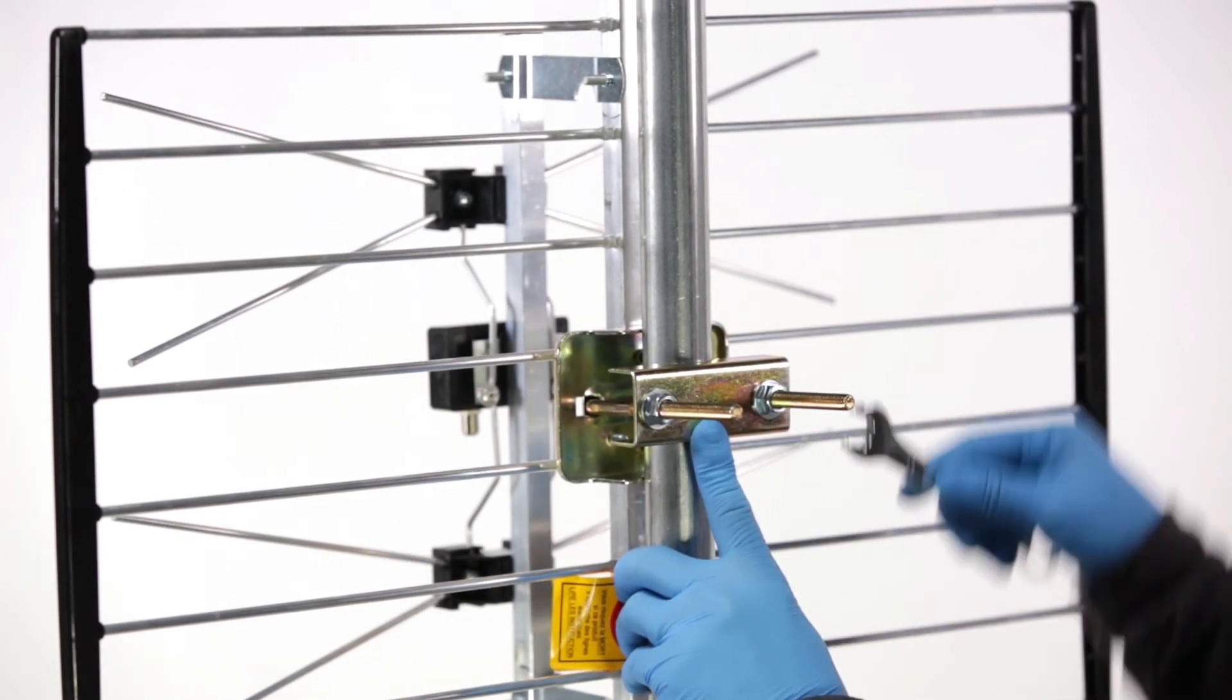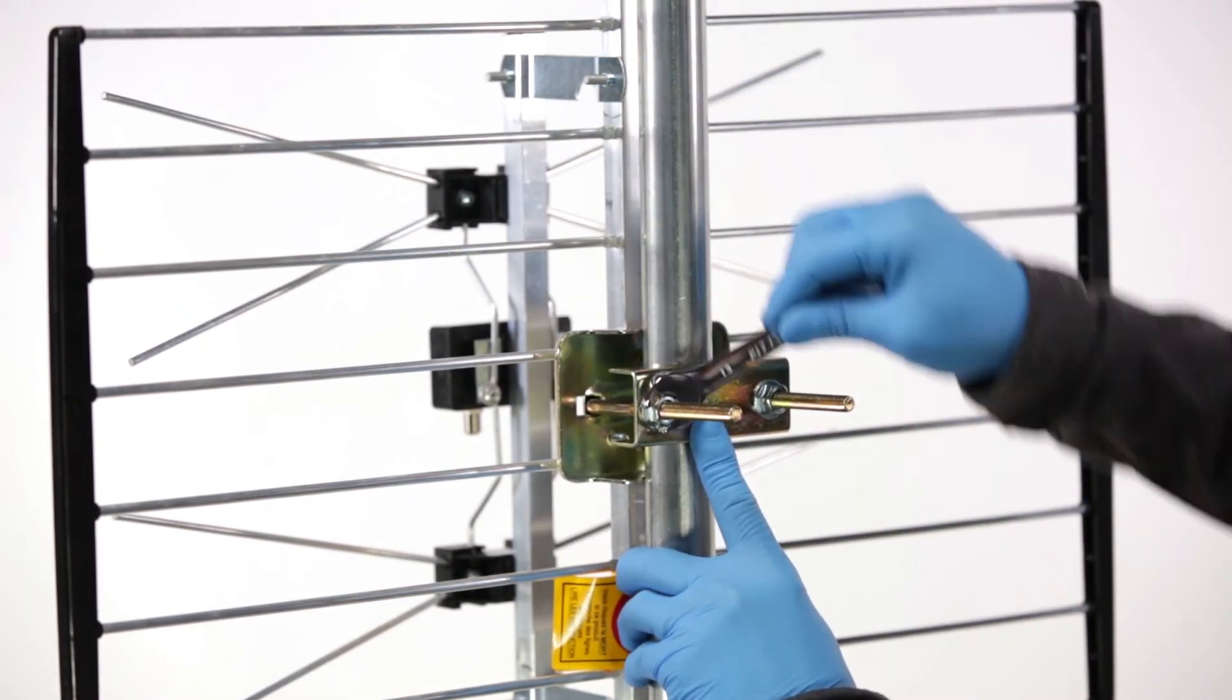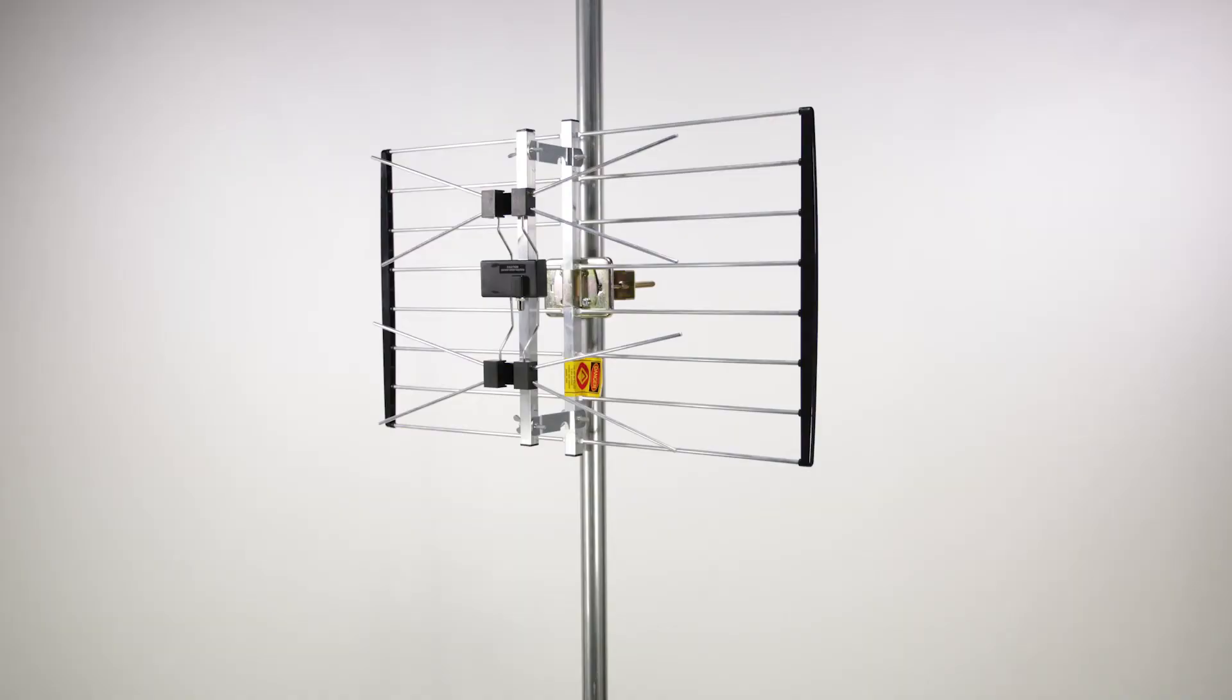Using a screwdriver and a wrench, tighten all loose hardware. This concludes the assembly of the Channel Master METROtenna.